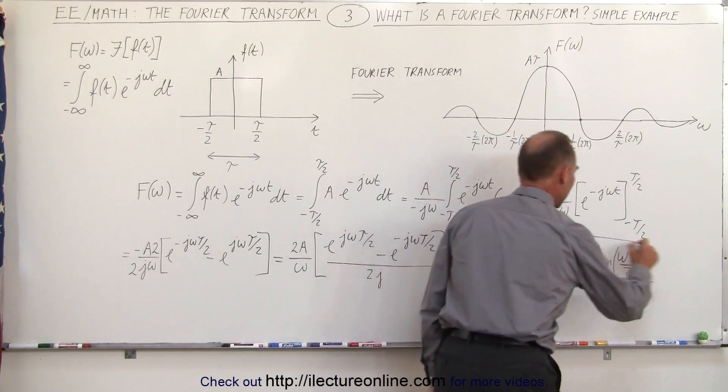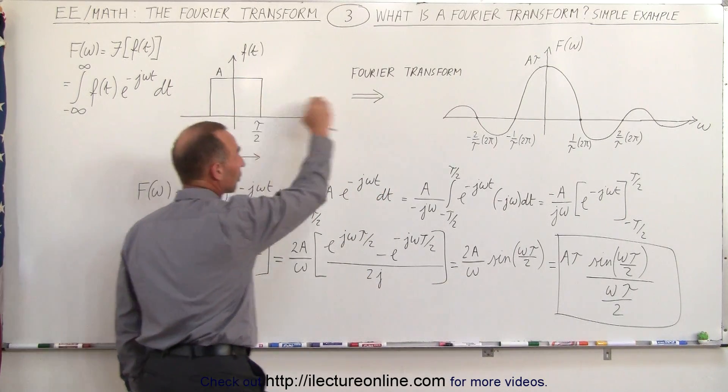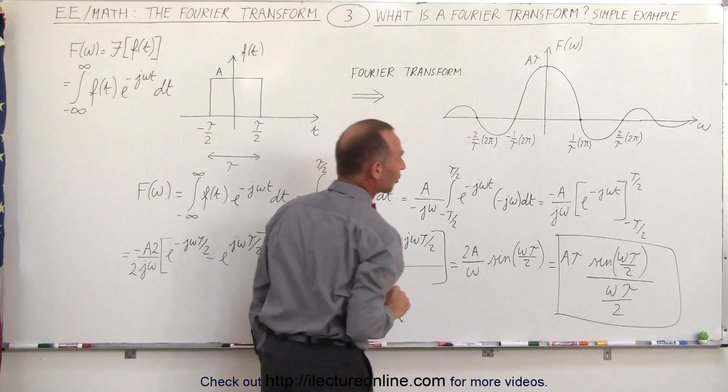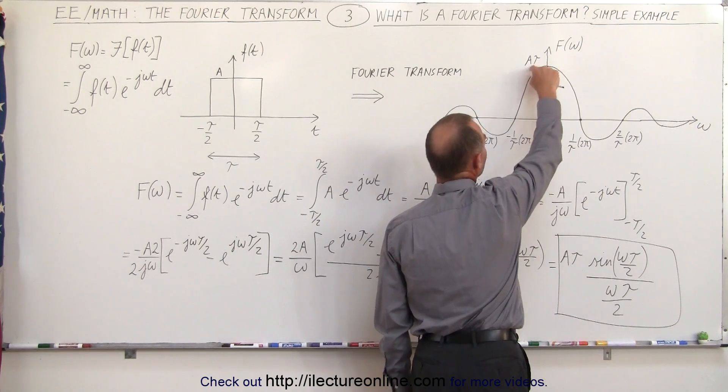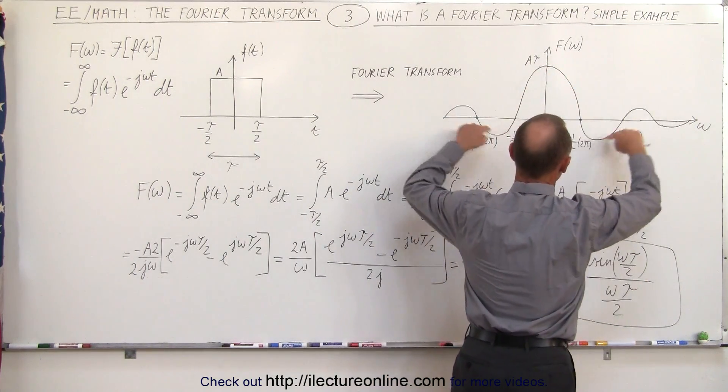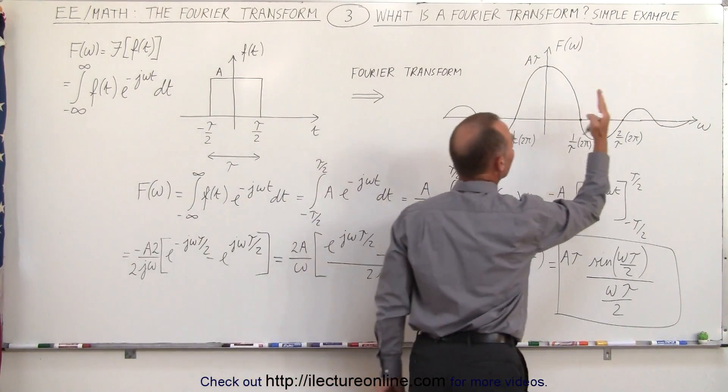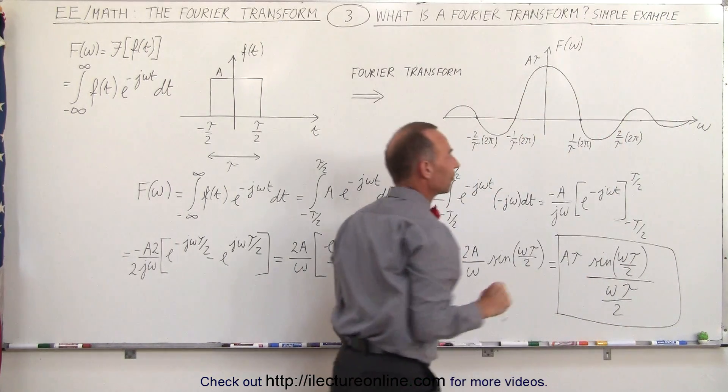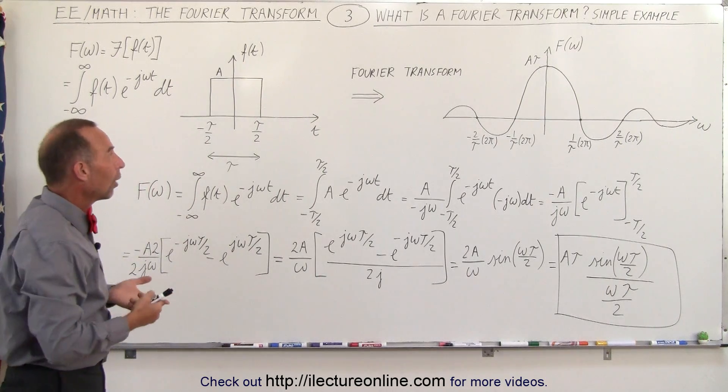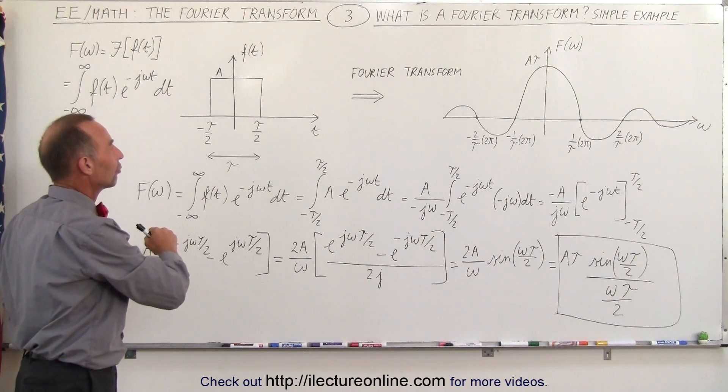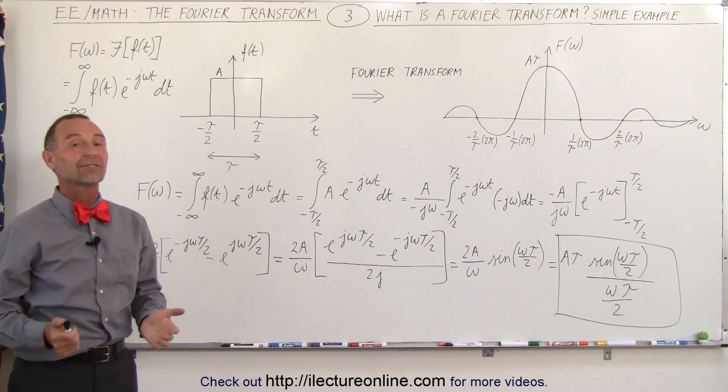And this is the Fourier transform of the single pulse input from the time domain. When we do a Fourier transform we have the appropriate function in the frequency domain. This is the amplitude we have right here at the center, A times tau, we have a sinc function which looks like this and then if we put the appropriate value in for tau we can find the exact location where the function crosses over the frequency axis. And that's a nice little example to show you how we use the mathematical definition of the Fourier transform and how we can then transform a certain input into the frequency domain. And that's how it's done.